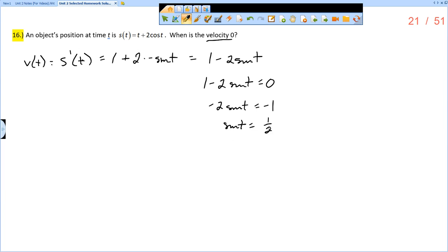So when is sine of t equal to 1 half? This is a unit circle question. Remember, there is no domain restriction, so we need to give a general solution. We know that sine is 1 half in quadrant 1 and in quadrant 2.